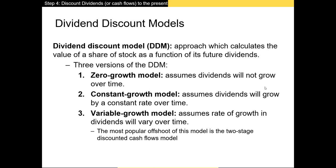When we perform valuation work in the real world we often use one of these three forms, each making a different assumption about the growth rate in future cash flows. In the zero growth model we assume cash flows don't increase or decrease. In the constant growth model we assume cash flows grow by a certain percentage every year. And in the variable growth model we assume that cash flows will change at a non-constant rate.